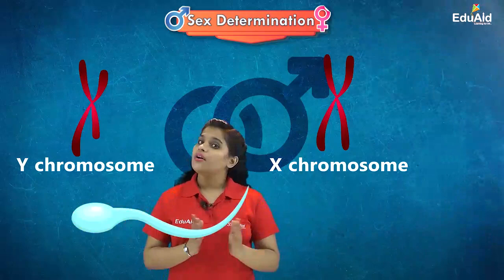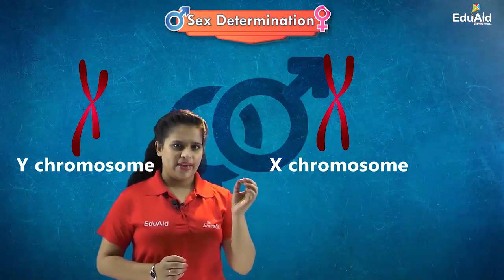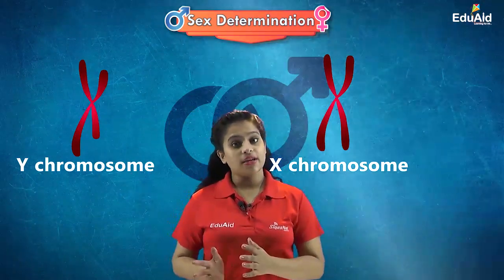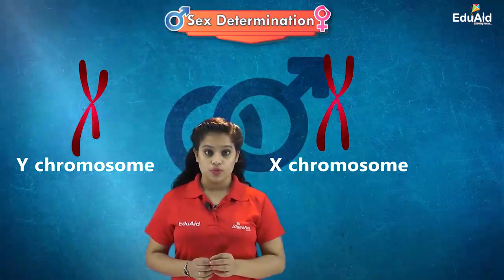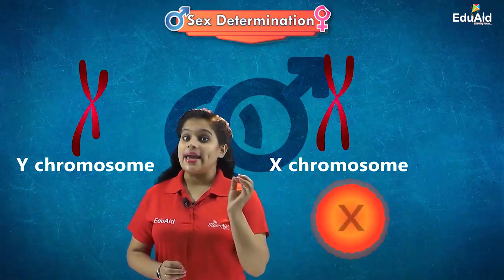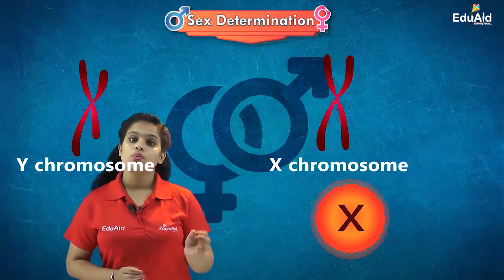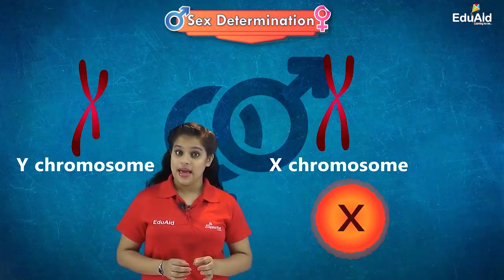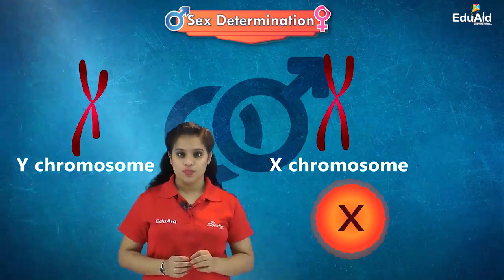In males, both the X and the Y chromosomes are present. Therefore, half of the male gametes will have an X chromosome and the other half will have the Y chromosome. But in females, only the X chromosome is present, which means all the female gametes will have an X chromosome.